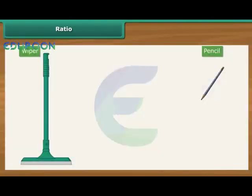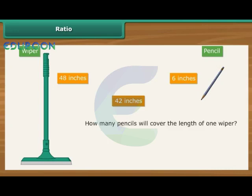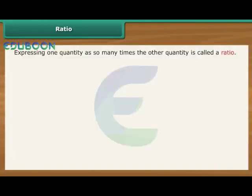For example, suppose we compare a 6 inch long pencil with a 48 inches long wiper. The wiper is 42 inches longer than the pencil. However, the difference does not bring out clearly the extent of variation in their lengths. How else do we express the variation? How many pencils will cover the length of one wiper? The answer is 48 divided by 6, that is 8. In other words, the wiper is 8 times longer than the pencil. Expressing one quantity as so many times the other quantity is called a ratio. 48 divided by 6 is 8 divided by 1, written as 8 is to 1. Colon is the symbol used to denote ratio.